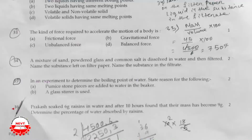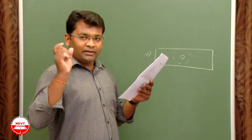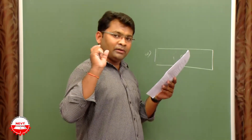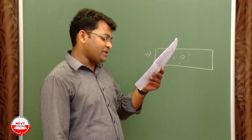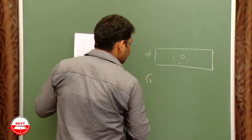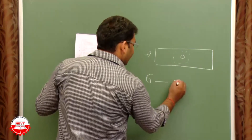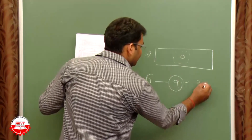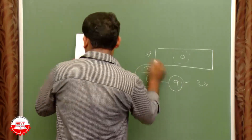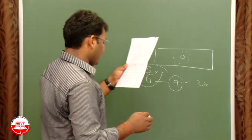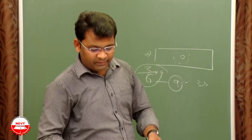Question: 6 grams of resin is placed in water and after 10 hours its mass becomes 9 grams. Water absorbed = 9 - 6 = 3 grams. Percentage of water absorbed = (3/6) × 100 = 50%.